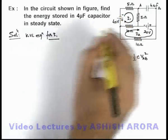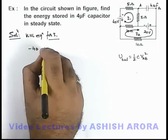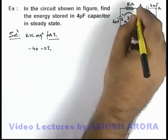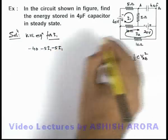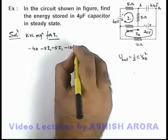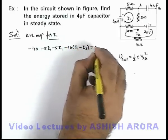Here this'll be a drop in potential of 40, and then it'll be minus 5i1, then again it is minus 5i1, and then it'll be minus 10(i1 minus i2) equals 0.